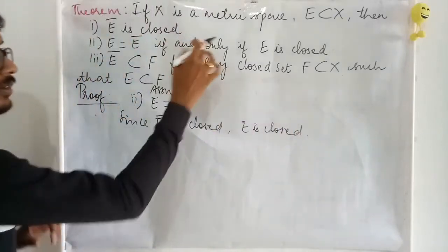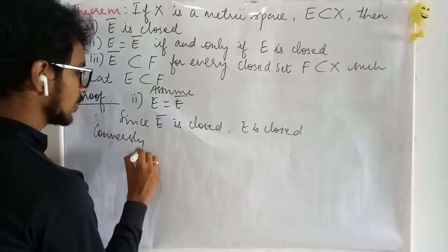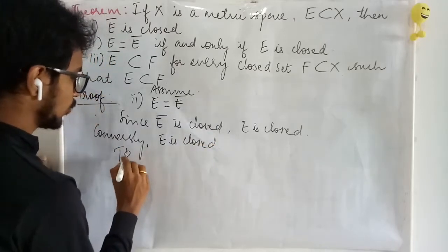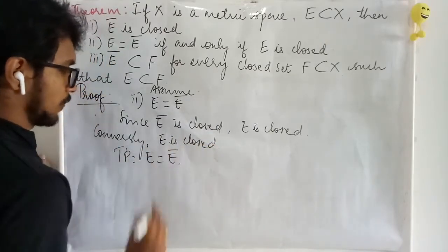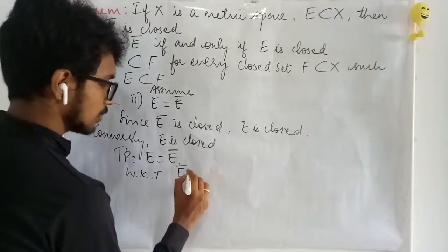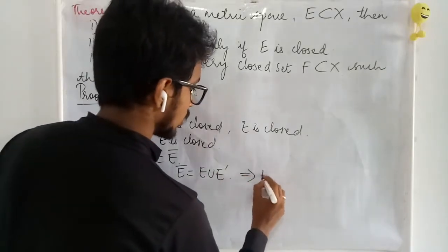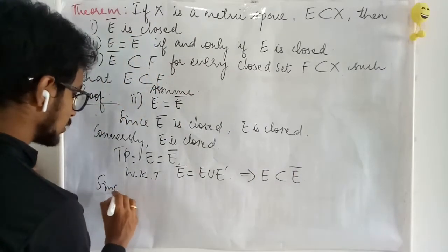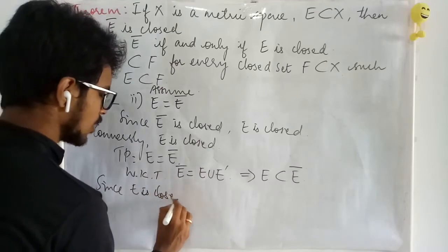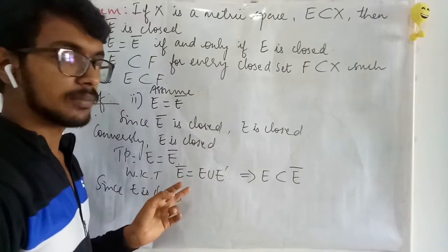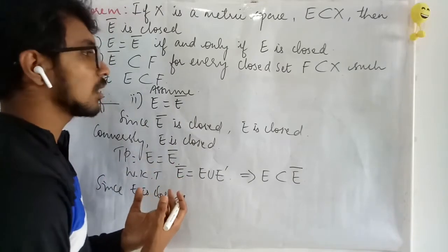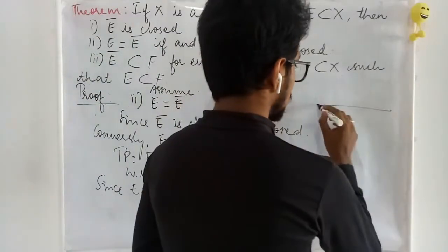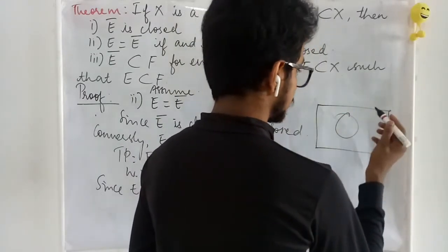Conversely, assume E is closed and we need to prove E equals E-bar. We know E-bar equals E union E-prime, which means E is always contained in E-bar. Since E is closed, all limit points of E belong to E, so E-prime is contained in E.